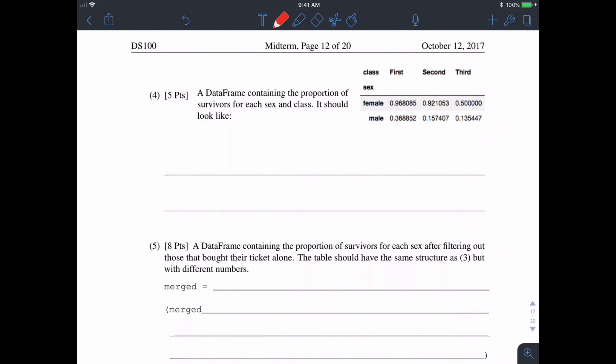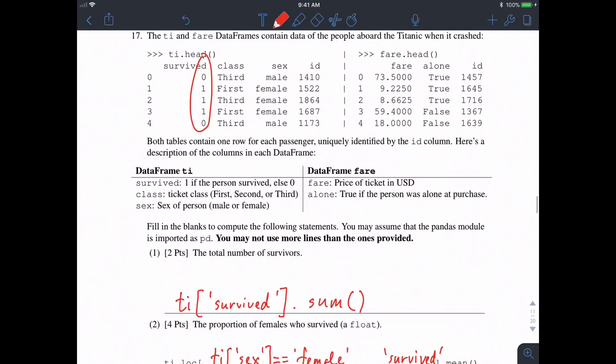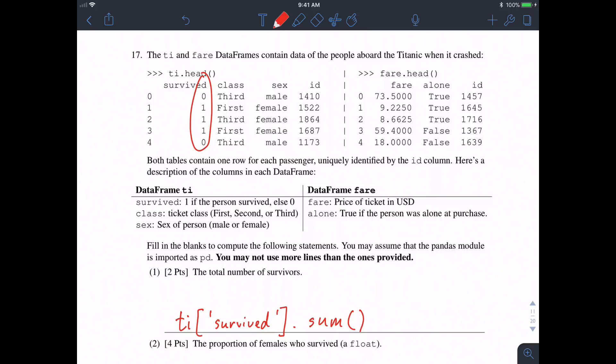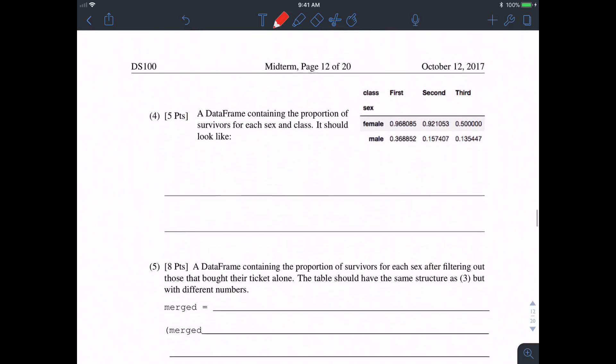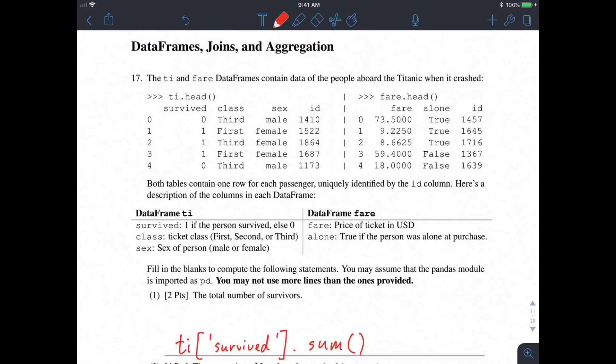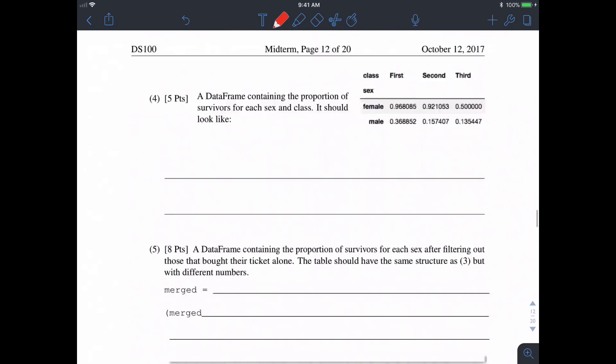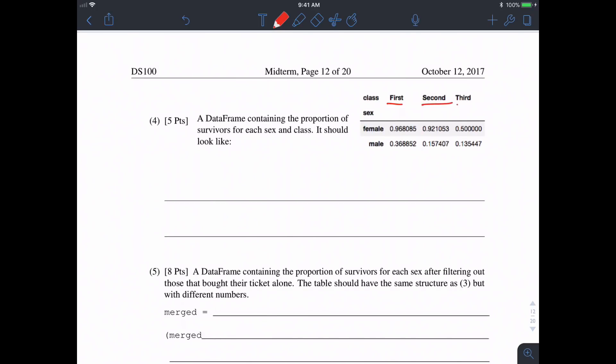Now in four, we want a data frame containing the proportion of survivors for each sex and class. So if you look back to the TI table, we have different classes first, third, and presumably, there's a second one as well. So what we will probably do is pivot this table so that our columns are class, because in the provided question, the columns were first, second, and third, the rows or the indices were sex, and the values were survived. So there's several pieces going on here. We'll use the pivot table function.